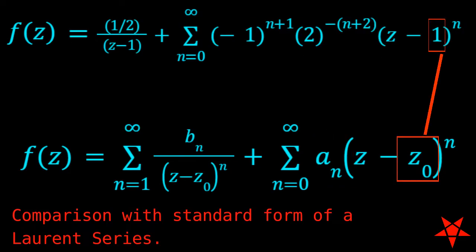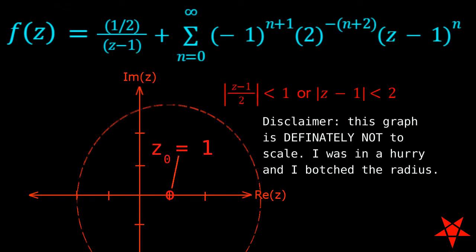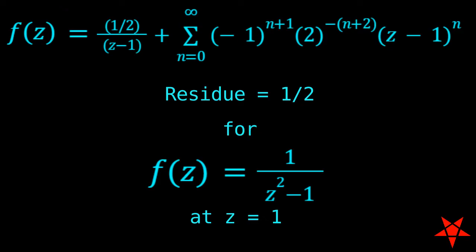There was no mention of finding a domain for the Laurent series in this problem, but it is good to be mindful of such things. If you check, you will find that there exists a finite radius of convergence for the geometric series about the point z equals 1 in the complex plane. With that said, the Laurent series is solid and the residue for f of z equals 1 over z squared minus 1 at z equals 1 is 1 half because that is the coefficient of the 1 over z minus 1 term.